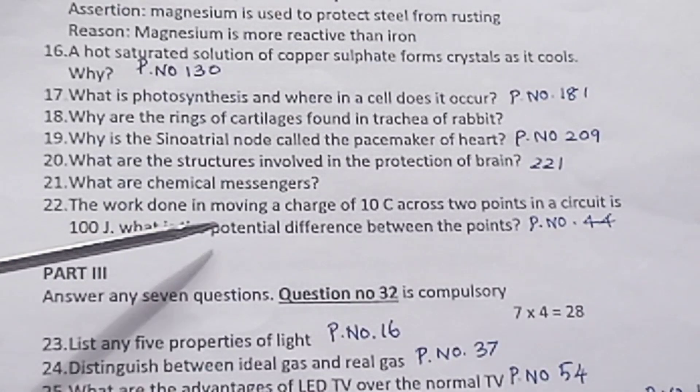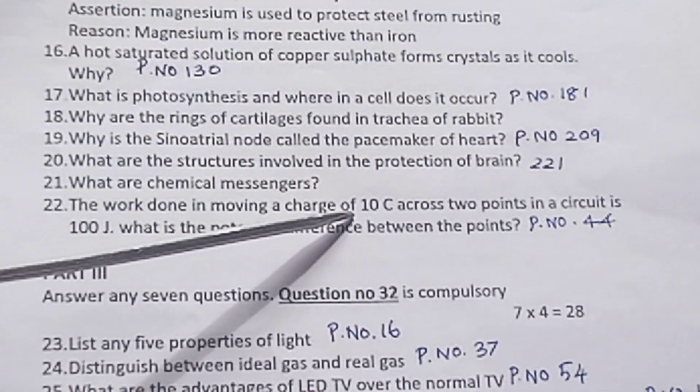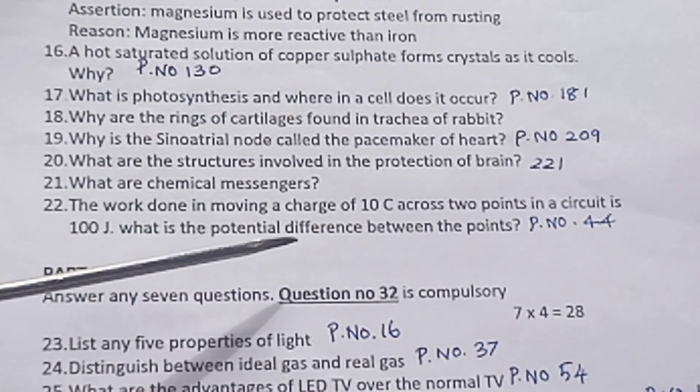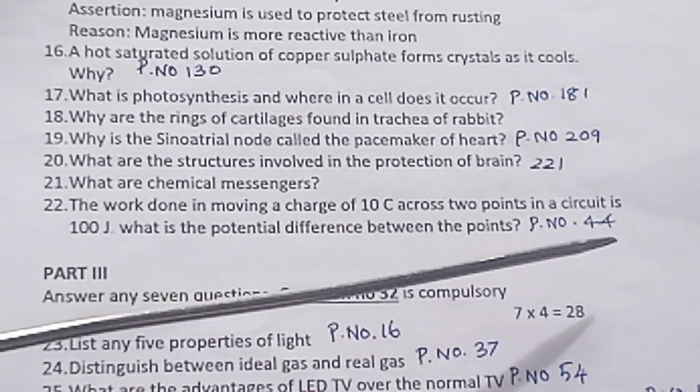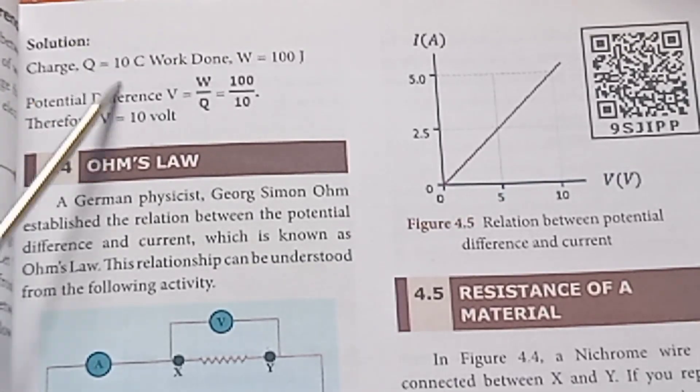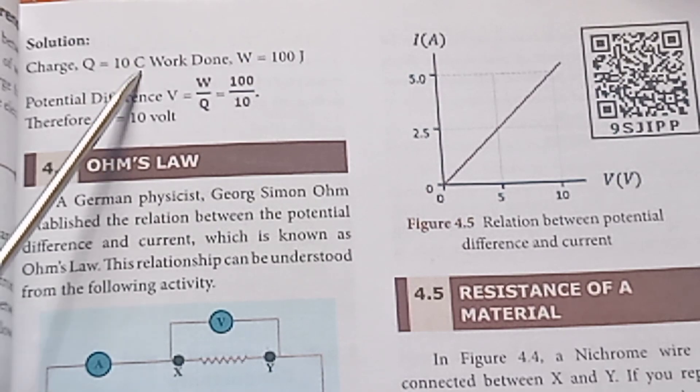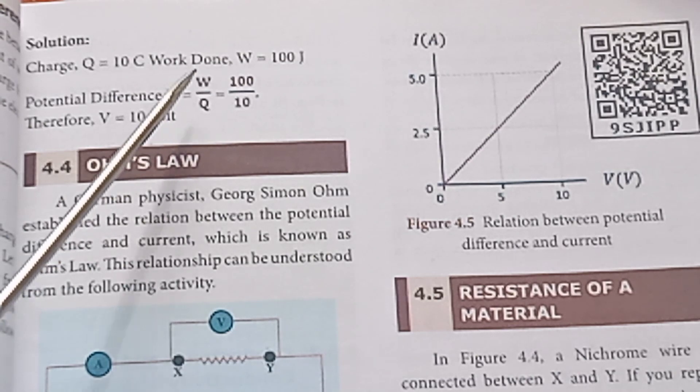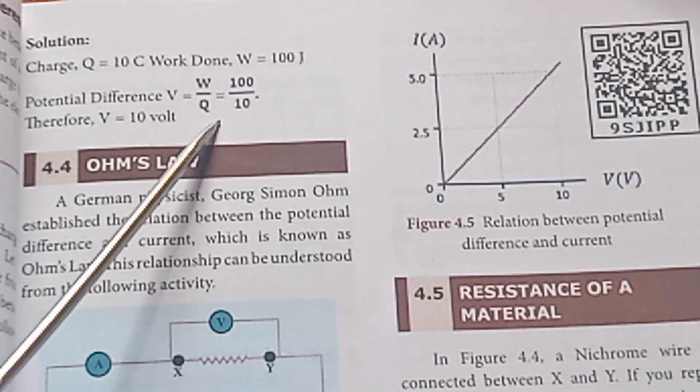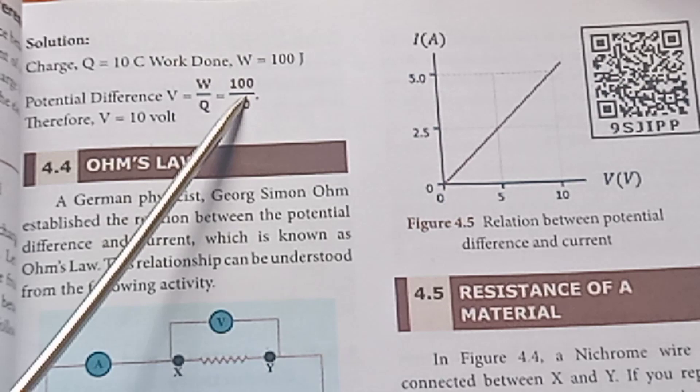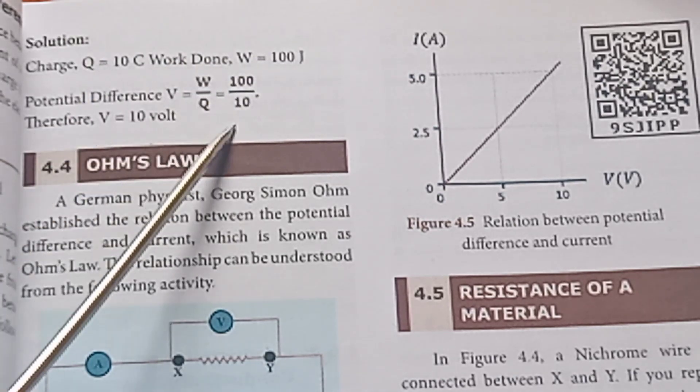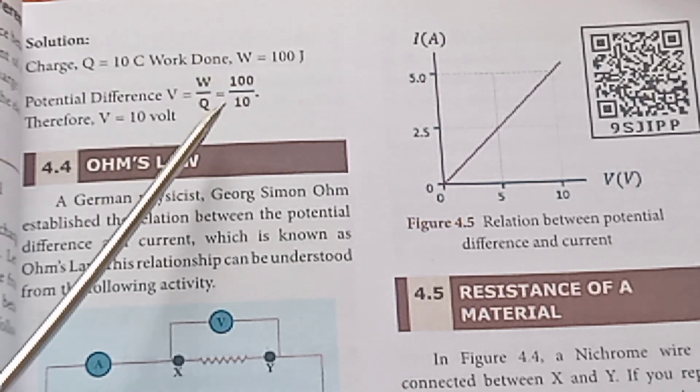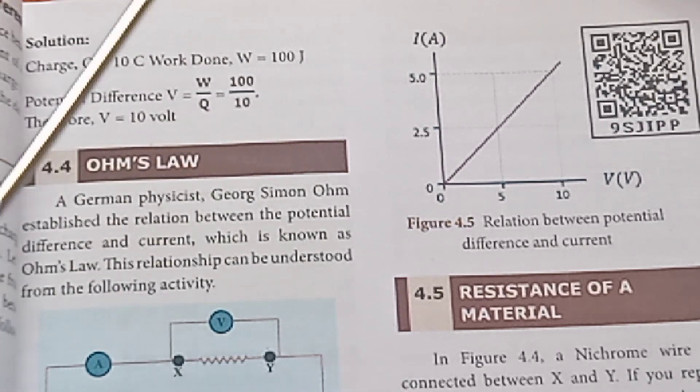Question 22: Compulsory question. The work done in moving a charge of 10 coulomb across two points in a circuit is 100 joule. What is the potential difference between the points? Page number 44. Charge Q = 10 coulomb. Work done W = 100 joule. Potential difference formula: V = work done by charge. Answer is 10 volt.